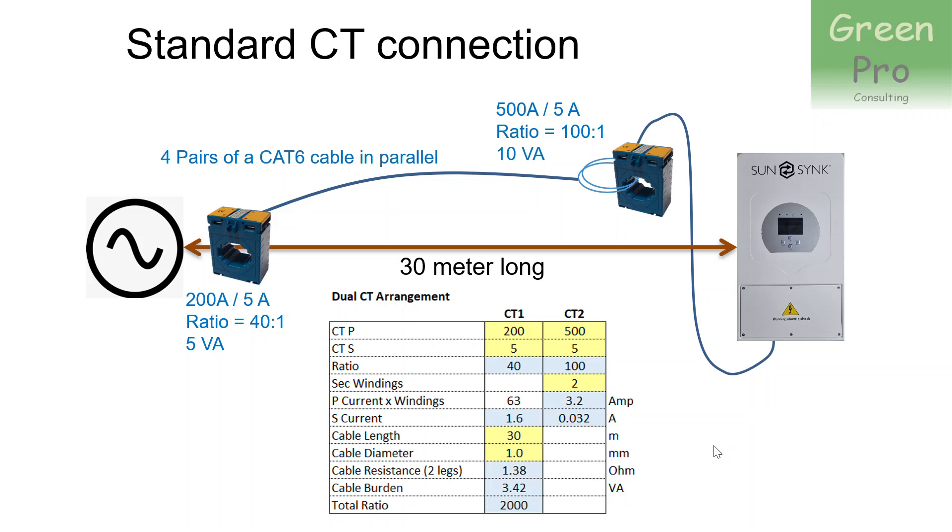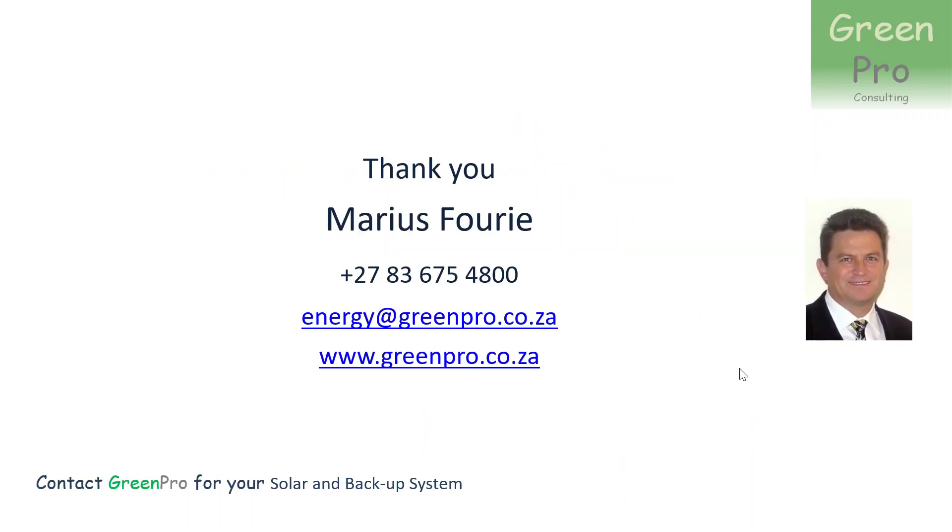And then I tried that and that seemed to work very well. Everything is now controlling properly. If you look at the readings in the inverter, you get the correct readings. We obviously checked that with a clamp meter and compared it to what the SunSync thinks the current is. And I'm happy to say that the dual CT arrangement actually works quite well if you've got longer distances.